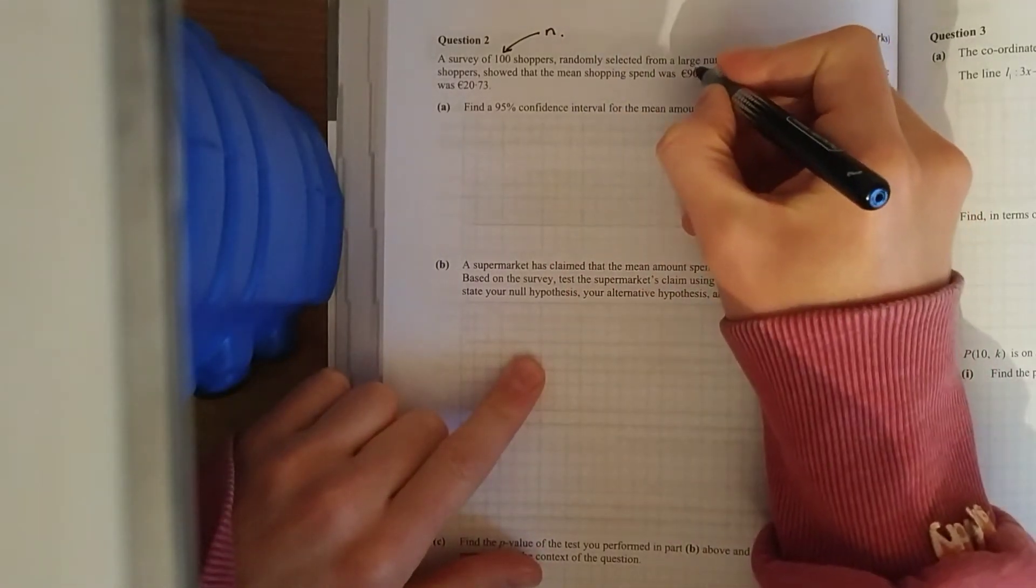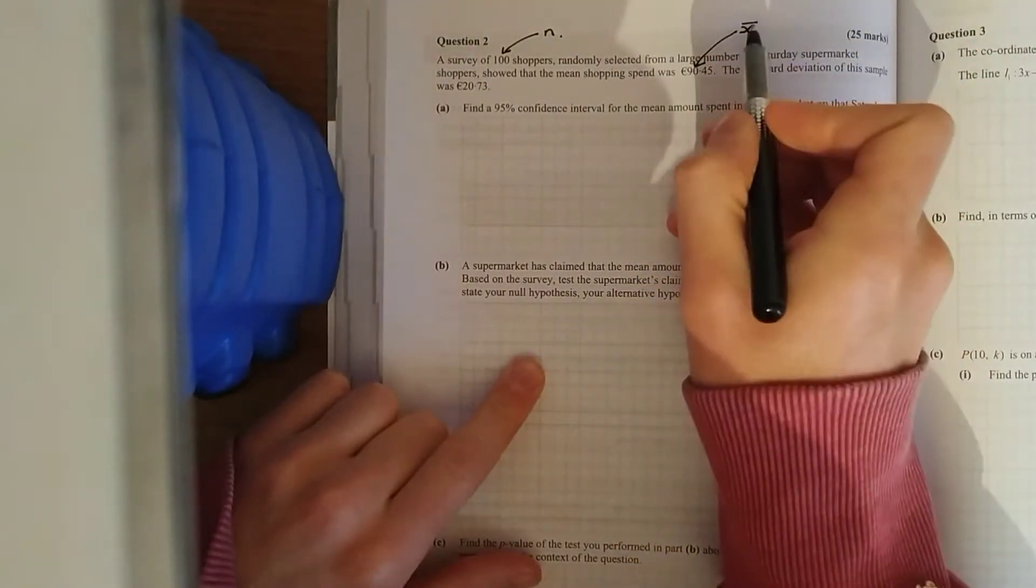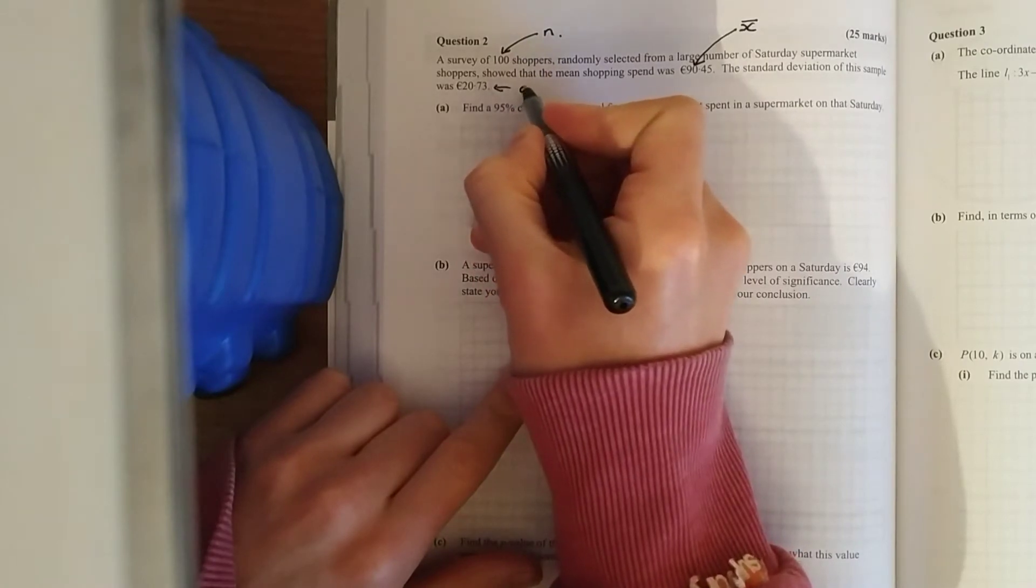So the mean shopping spend, that's not of the entire population, it's of a sample, it's X cap. So the sample mean and the standard deviation, there's a funny looking symbol for that.